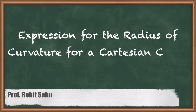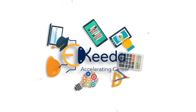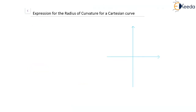Hello. In this session we will discuss the expression for the radius of curvature for a Cartesian curve. Let us say that we are in the Cartesian coordinate system with the horizontal axis as x and the vertical as y. Let's say this is our curve. Now since we are in the Cartesian coordinate system, we can say that y is actually a function of x, and let's say we are considering a point on this curve, P.